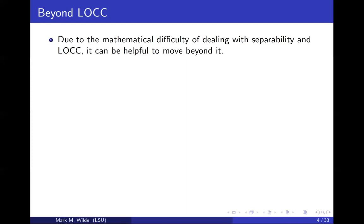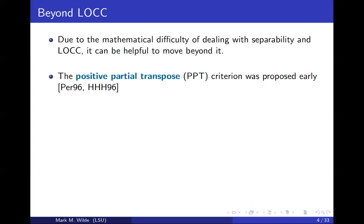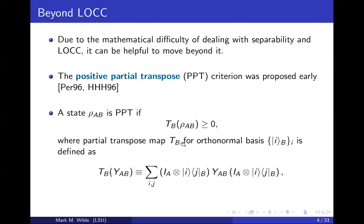If you want to optimize over separable states or LOCC channels, that's going to be hard to do. It can be helpful to enlarge the class to make it more tractable. This was an early concept by Asher Peres and the Horodecki family called the positive partial transpose criterion. If I have a bipartite operator, the partial transpose operation works like this: you write down the matrix Y_AB, divide it into sectors, and on each of those sub-matrices you do a transpose. That is called the partial transpose.